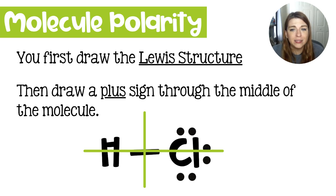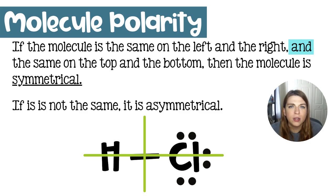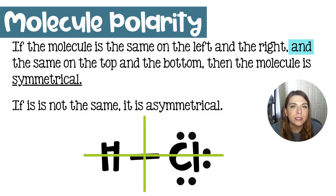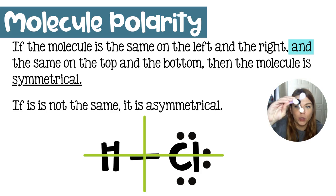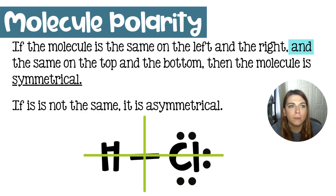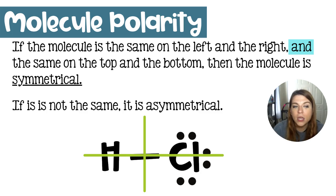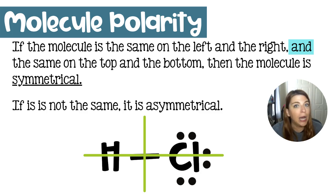I like to do this by drawing a plus sign through the middle of the molecule to look for symmetry. This is not the same symmetry that you're looking for in geometry class. We are looking for two axes of symmetry. The molecule must be symmetrical left and right and top and bottom in order to be considered symmetrical, because molecules exist in three dimensions. A two-dimensional symmetry is not going to cut it on our three-dimensional molecules. If it is not the same, then we would say that molecule is asymmetrical.